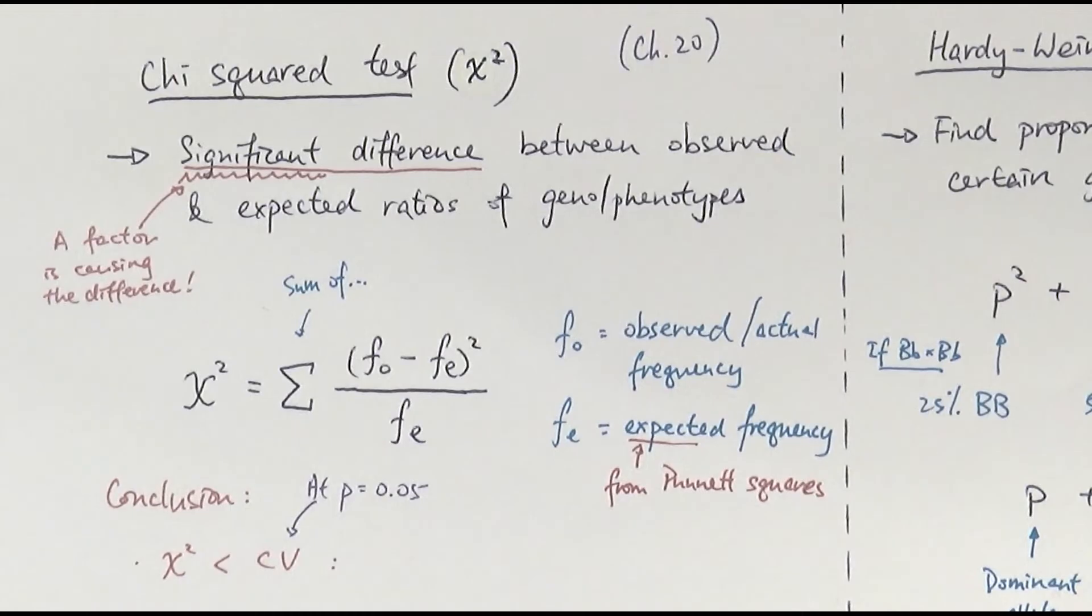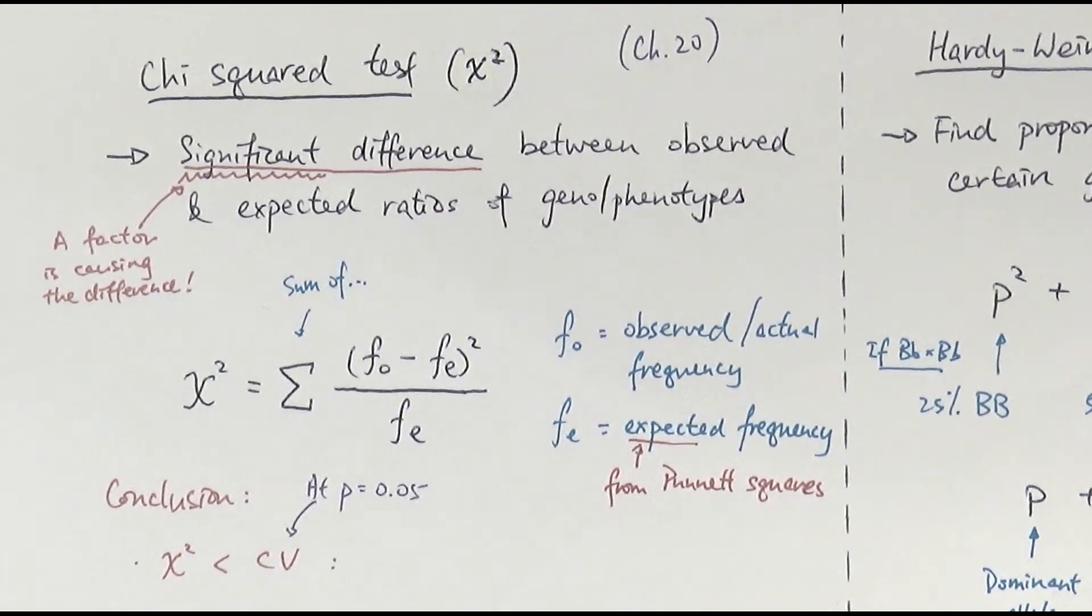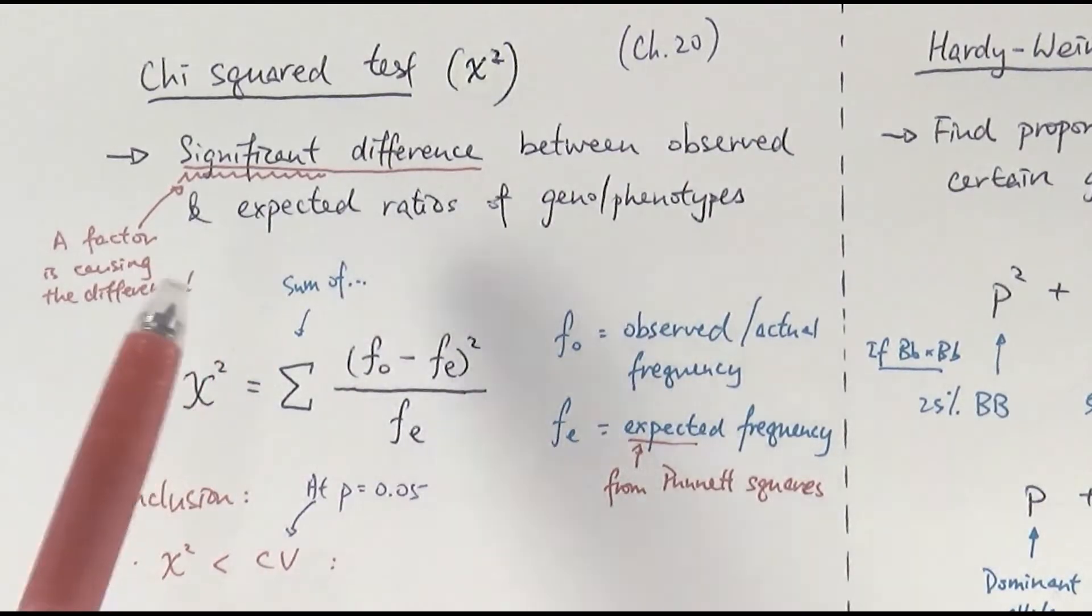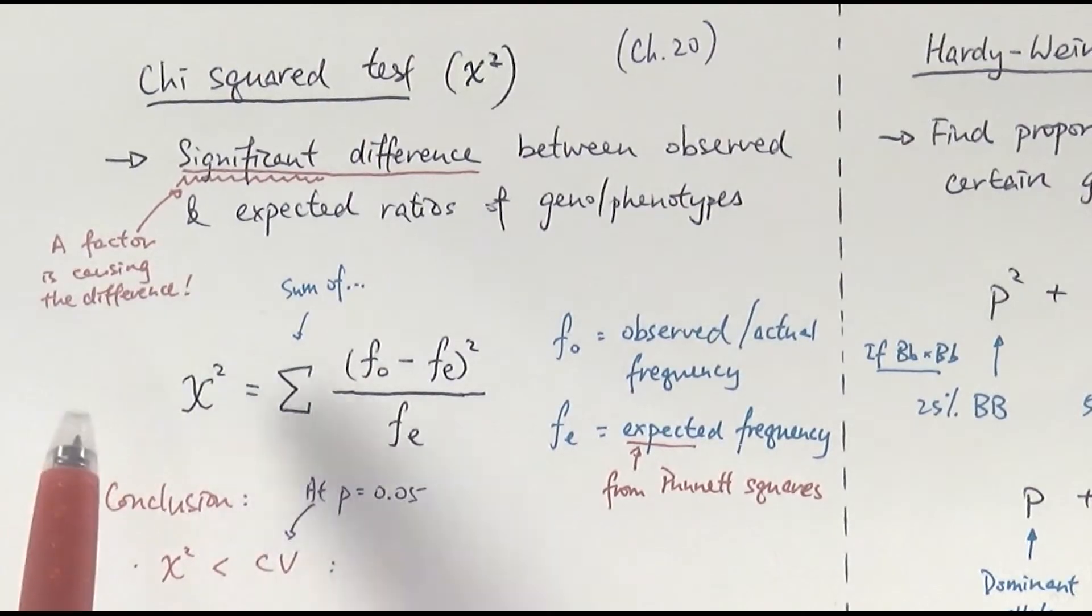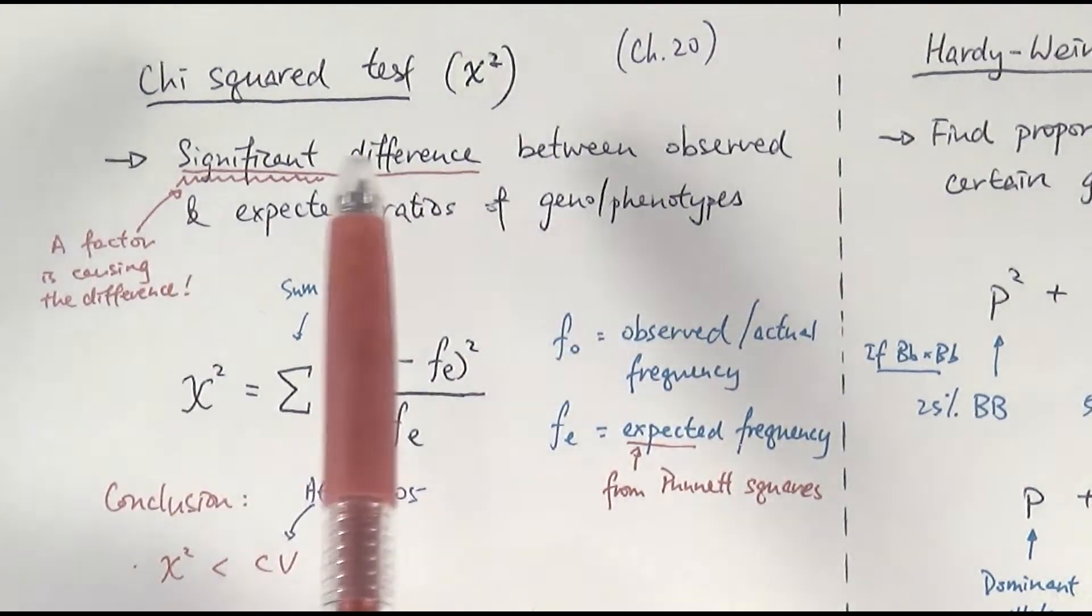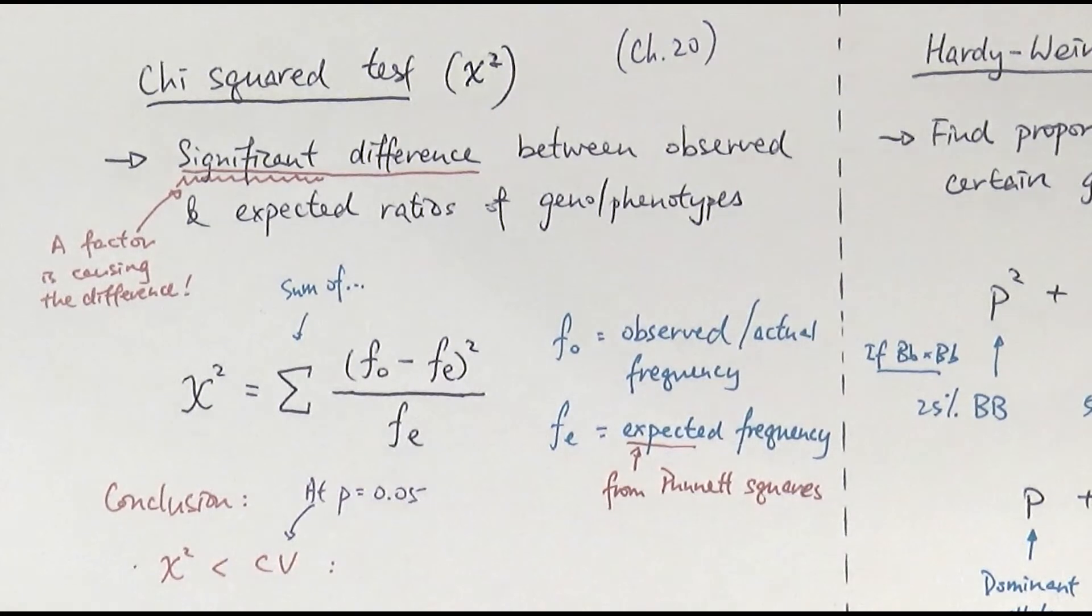The next bit will be the chi-square test. And usually you find it in chapter 20, which is the inheritance chapter. This is again, one of the other equations that will be given to you. The ones we just mentioned earlier, the respiratory quotient and also the cycling one, you will have to memorize. But this one, any stats bit, basically, they will give the equation to you. So the point of chi-square tests is to find the significant difference between the observed and expected ratio of certain genotypes or phenotypes. Again, the word significant is important because it is indicating there is a factor causing the difference. In the case of chi-square tests, the most commonly used thing here, we're about identifying if linkage is happening.